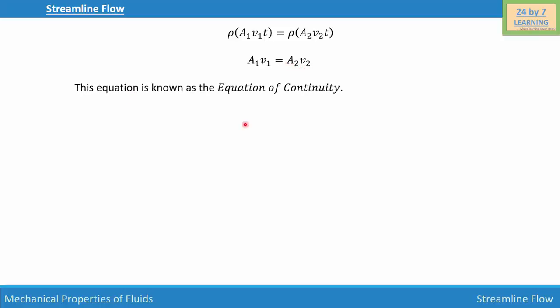We can also write Av = constant because according to the equation of continuity, area times velocity for any fluid is constant if the fluid is in streamline flow. This equation is also known as the flow rate equation and this is how we define streamlined flow.